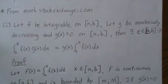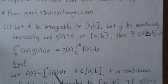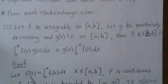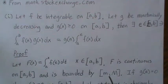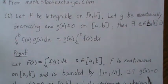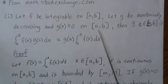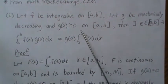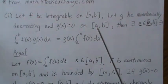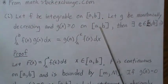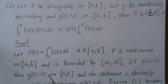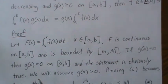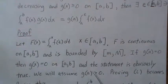Here's the proof. Let's let capital F of X equal the integral from A to X of f of x. Since F was integrable, capital F is continuous on AB and thus bounded. Let's call the bounds little m and big M. Note: if G of A equals zero, and G is monotonically decreasing but always positive, then G is zero on the whole interval, making the statement trivially true. So we'll assume G of A is positive and then decreases after that.